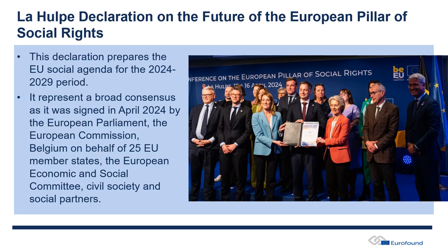We have a good sense of how this will happen in the La Ulp Declaration on the Future of the European Pillar of Social Rights — a declaration signed at a high-level conference in April of this year. It basically shows how the EU social agenda will pan out in the next few years. What's important about this declaration is its widespread consensus: it was signed not only by all EU institutions, but by 25 out of 27 member states, and also by civil society and social partners.